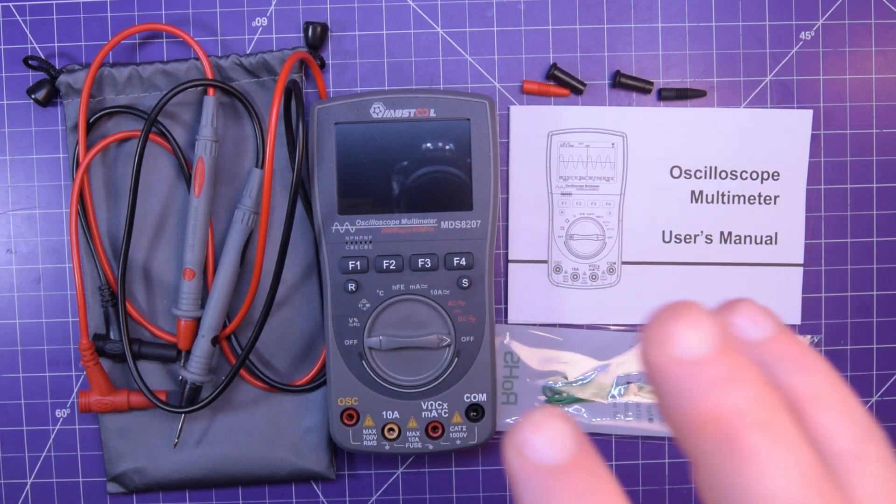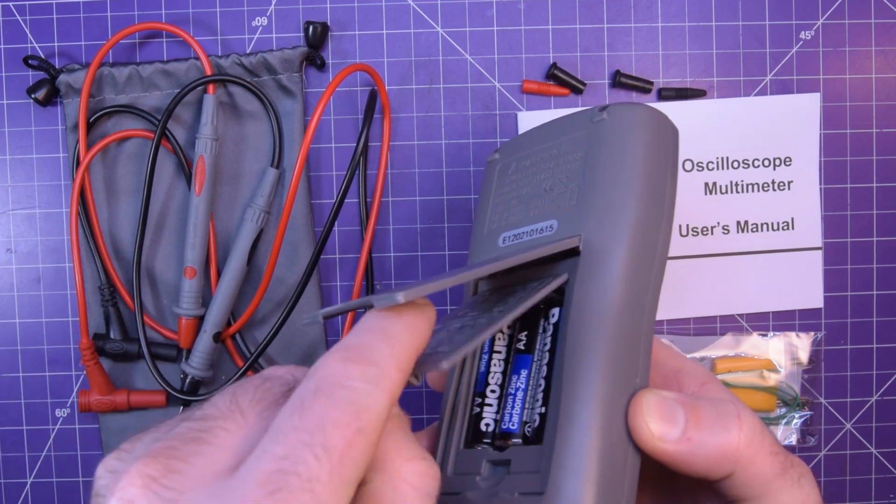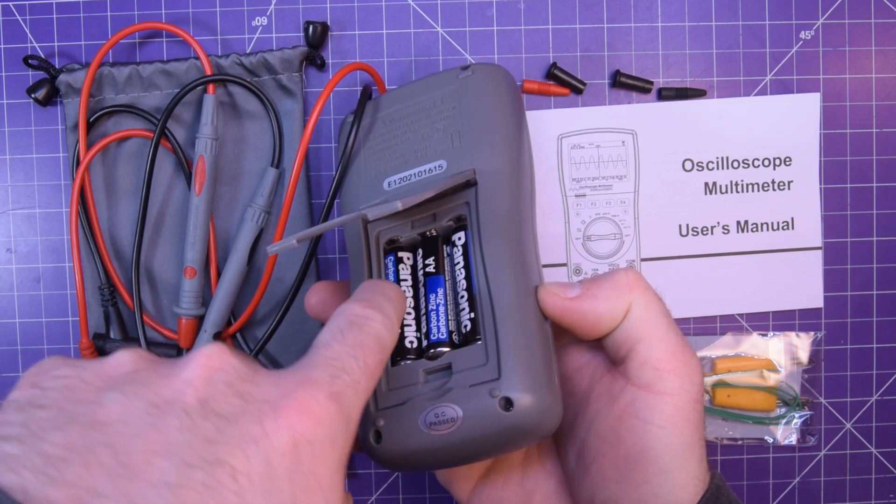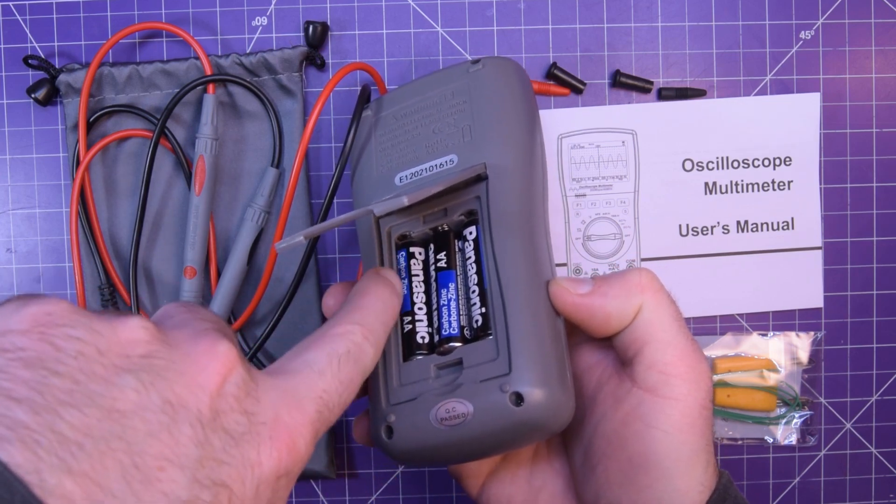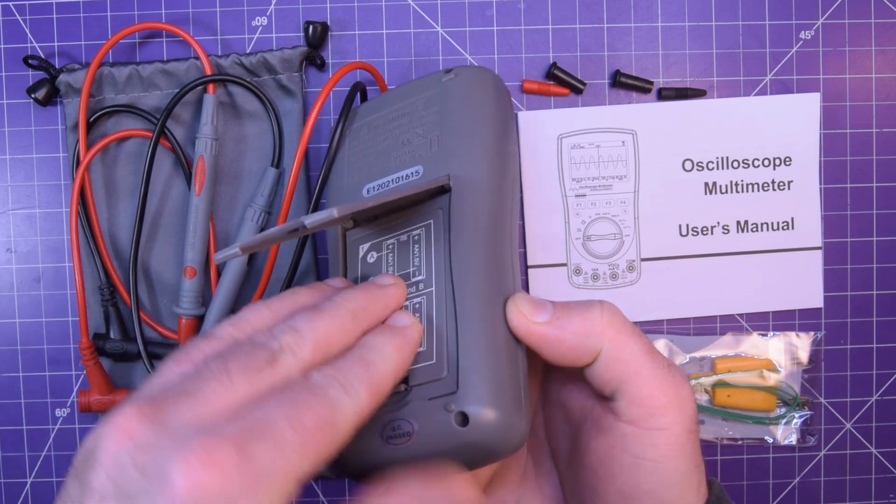You need three AA batteries which go on and off underneath the tilting bale here. It's a little bit special because you have to put the outside ones in first because they kind of go underneath the case and then you put the middle one.